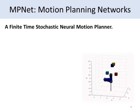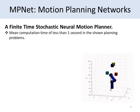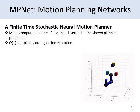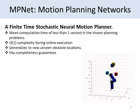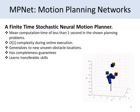To summarize, MPNet has a mean computation time of less than one second in the shown planning problems. It has O(1) computational complexity, it generalizes to new unseen obstacle locations while retaining completeness guarantees, and last but not least, it learns transferable skills.